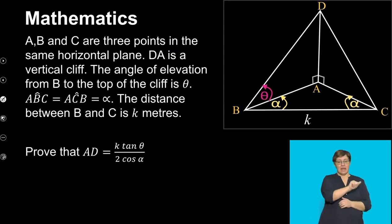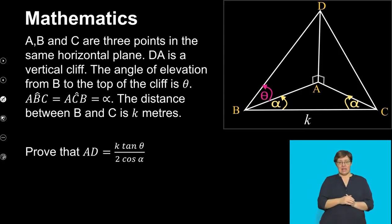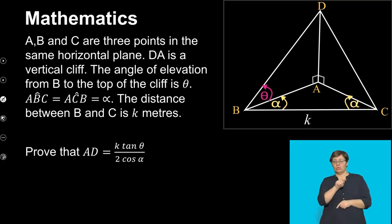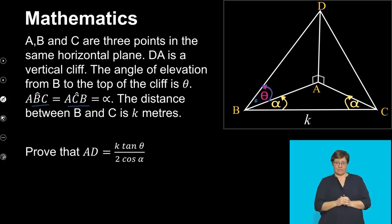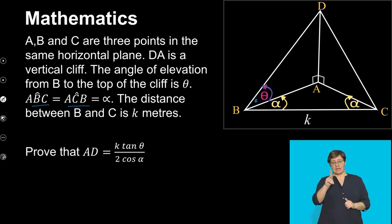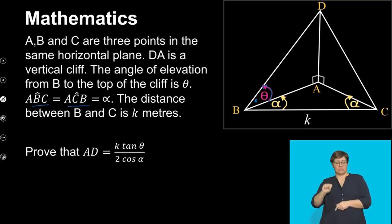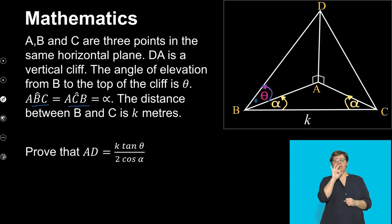Let's look at our first example. A, B, and C are three points in the same horizontal plane. DA is a vertical cliff. The angle of elevation from B to the top of the cliff D is θ. Angles ABC and ACB are both α. The distance between B and C is k metres. We need to prove that AD = k tan θ / (2 cos α).